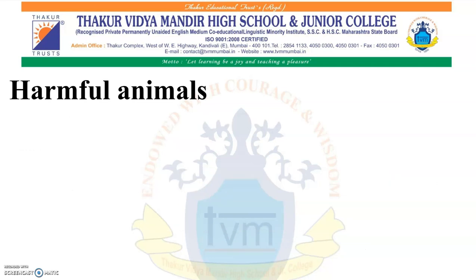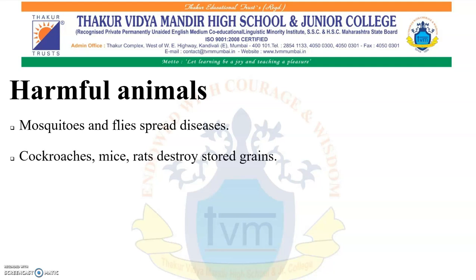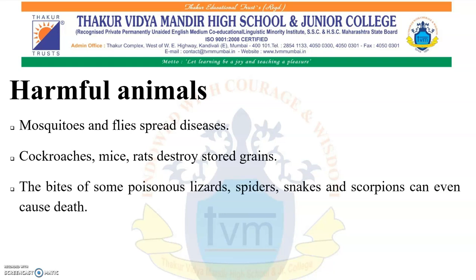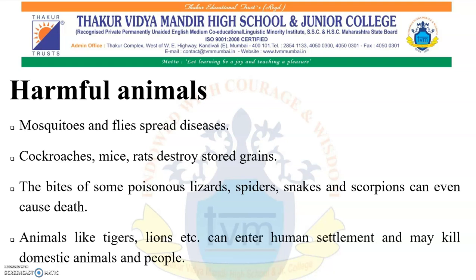Like plants, some animals are also harmful to us. Mosquitoes and flies spread disease. Cockroaches, mice, and rats destroy stored grains. The bites of some poisonous lizards, spiders, snakes, and scorpions can even cause death. Animals like tigers and lions can enter human settlements and may kill domestic animals and people.